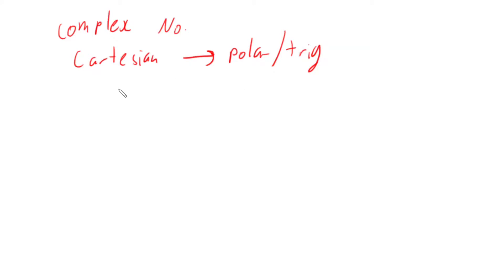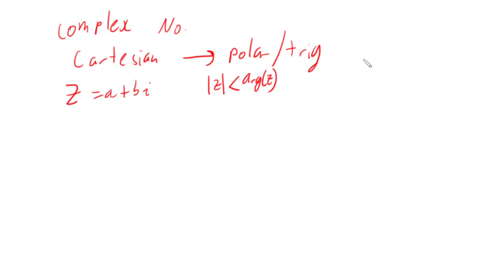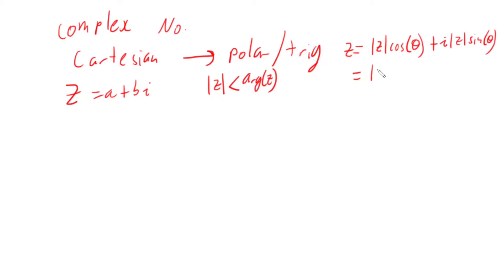Polar form is basically, if I've got a complex number z which is some a plus bi, the polar form is the magnitude of z — or the modulus of z — and an angle, the argument of z. The trigonometric form is where z is written as the magnitude of z times cos of the argument of z (theta), plus i times the magnitude of z times sine of the argument, which is quite often shortened to the magnitude of z cis the argument.